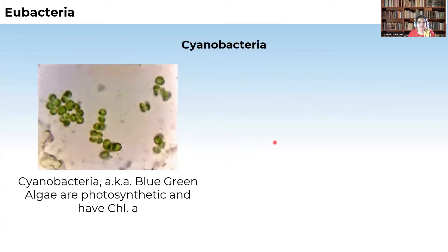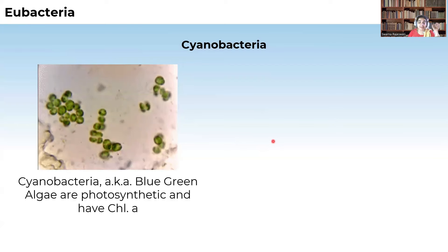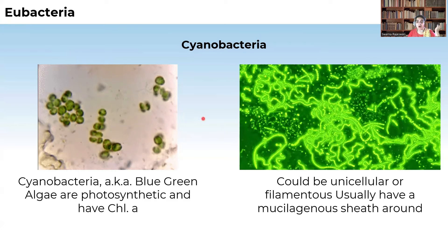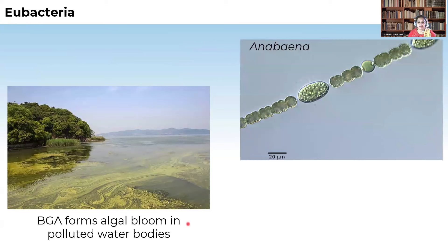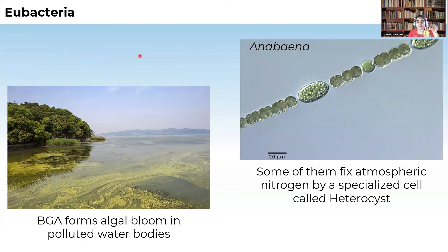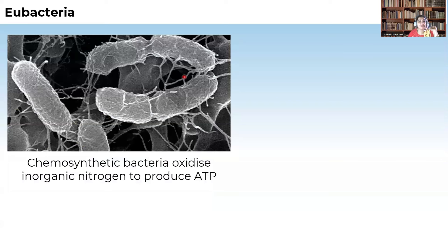Coming to cyanobacteria, which are called blue-green algae because they are photosynthetic in nature due to the presence of chlorophyll pigment — they are autotrophs. They could be unicellular or filamentous and usually have a mucilaginous sheet around them. Algal blooms in water bodies include cyanobacteria. Anabaena is also a cyanobacteria that helps in nitrogen fixation in leguminous plants, which helps in fertilizing the soil. Some bacteria are also chemosynthetic — they oxidize nitrogen to produce ATP.